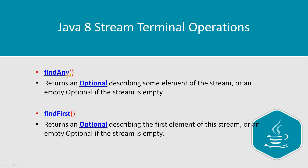findAny and findFirst both work similarly — you pass a condition and they return a matching element. The difference is that findFirst always returns the first matching element. For example, for elements 1 to 10 with condition 'greater than 5', findFirst always returns 6. But findAny can return any matching element — 6, 7, or anything else — and the result is unpredictable as it depends on the system. Both return an Optional.